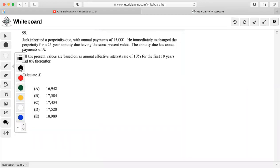Alright, so for this problem it says that Jack inherited a perpetuity due with annual payments of $15,000. He immediately exchanged the perpetuity for a 25-year annuity due having the same present value. The annuity due has annual payments of X.